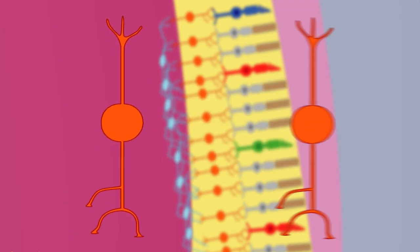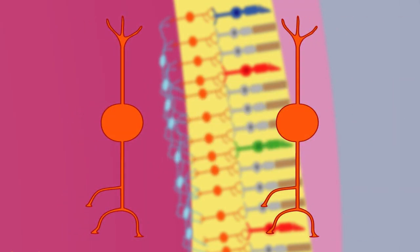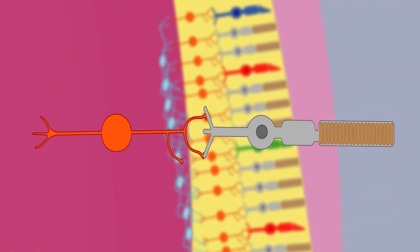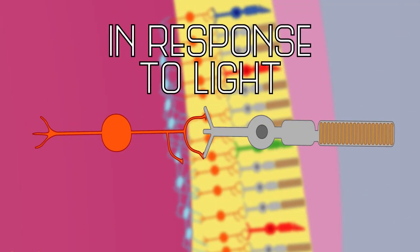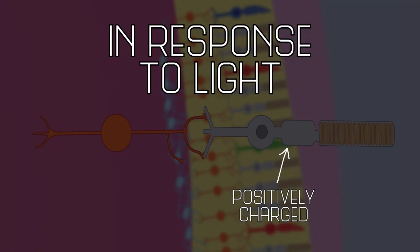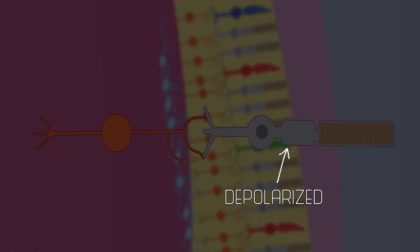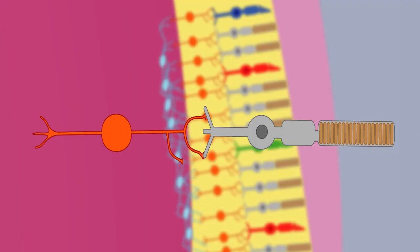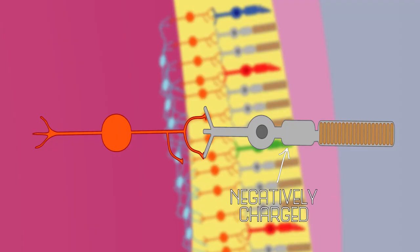Some bipolar cells fire in response to light. When the photoreceptor is more positively charged, or depolarized, it blocks these bipolar cells from firing. So when light hits the photoreceptor and hyperpolarizes it, making the photoreceptor more negatively charged on the inside, this allows the bipolar cell to depolarize and pass the message along.